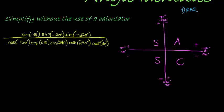So to do that: sine of negative 45 degrees is in the fourth quadrant, where cosine is positive, which means sine there is negative — so this becomes negative sine of 45 degrees.